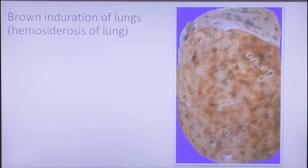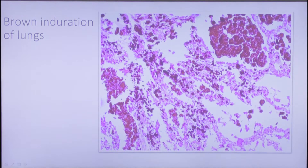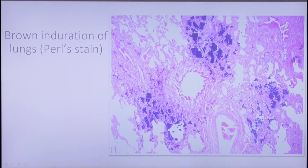This next picture shows a surely pathological condition: brown induration of the lungs. It happens due to chronic venous congestion in the small circle of blood circulation. Macroscopically, the lung would be more dense and brownish. Microscopically, we see alveoli that are more sclerotic and fibrotic, with accumulation of hemosiderin from breakdown of red blood cells that remain too long due to congestion. Here is the same process using a special pearl stain that colors iron in blue, as iron is present here due to hemosiderin accumulation.